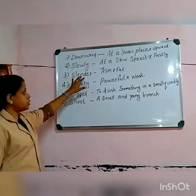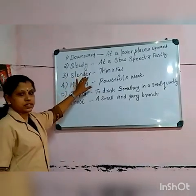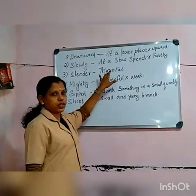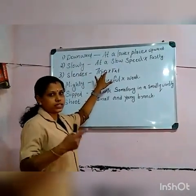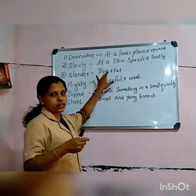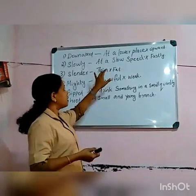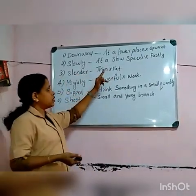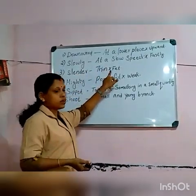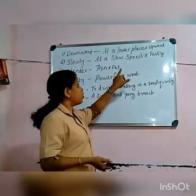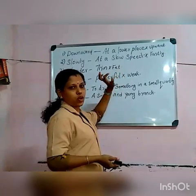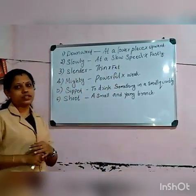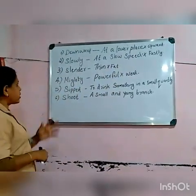Third one: slender. Slender means thin — thin branches, for example. The opposite of slender is fat.